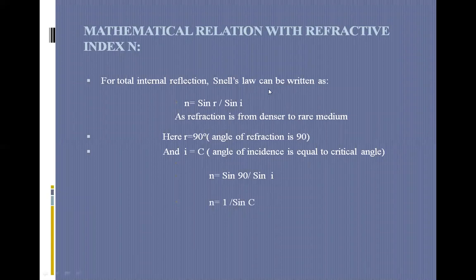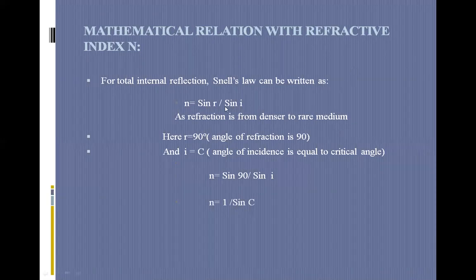For the mathematical derivation: Snell's law when light travels from rarer to denser medium is n = sine i over sine r. But when a ray travels from denser to rarer medium, it reverses to n = sine r over sine i. For the critical angle, the angle of incidence equals c and the angle of refraction equals 90 degrees. Substituting: sine 90 equals 1, so n = sine 90 over sine c = 1 over sine c. Therefore n equals 1 over sine c.